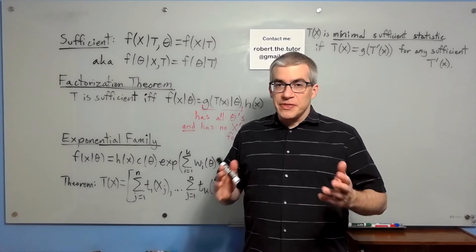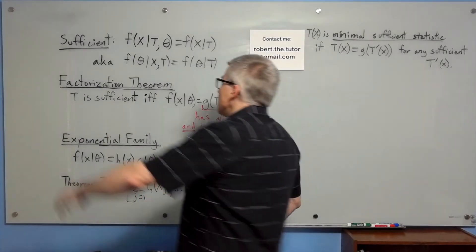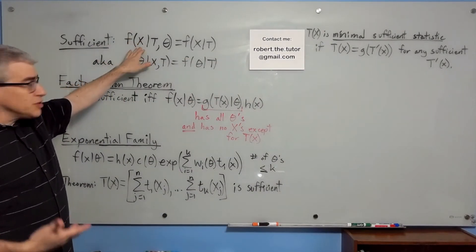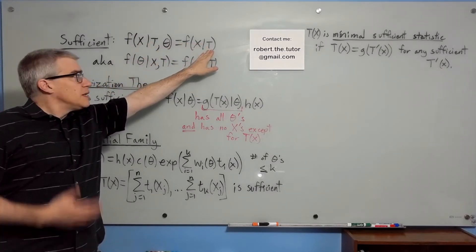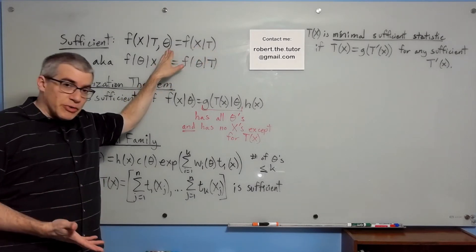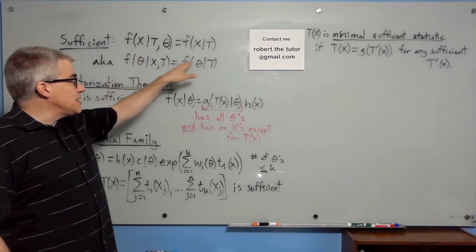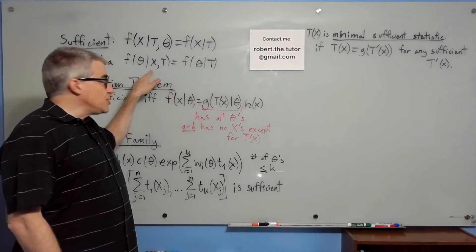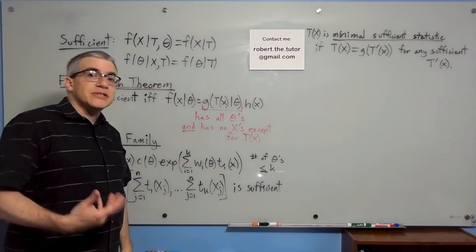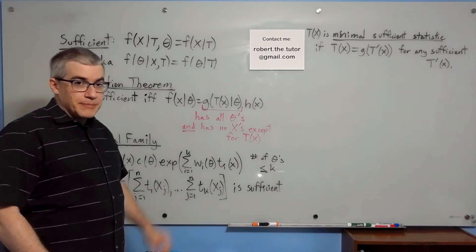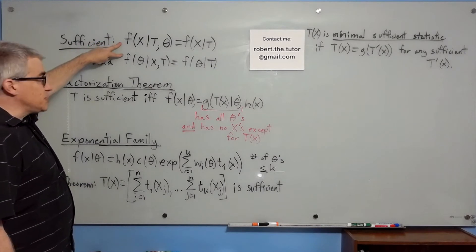Here are some definitions and theorems about sufficient statistics, minimal sufficient, and complete statistics. A statistic is sufficient if the conditional distribution of x given t and theta is just the conditional distribution of x given t, where t is the statistic, x is the data, and theta is the parameters. This is equivalent to saying the distribution of theta given x and t is the distribution of theta given t — the intuitive meaning being that if you know the statistic, you don't need to go back to the data. These are equivalent because they express independence.